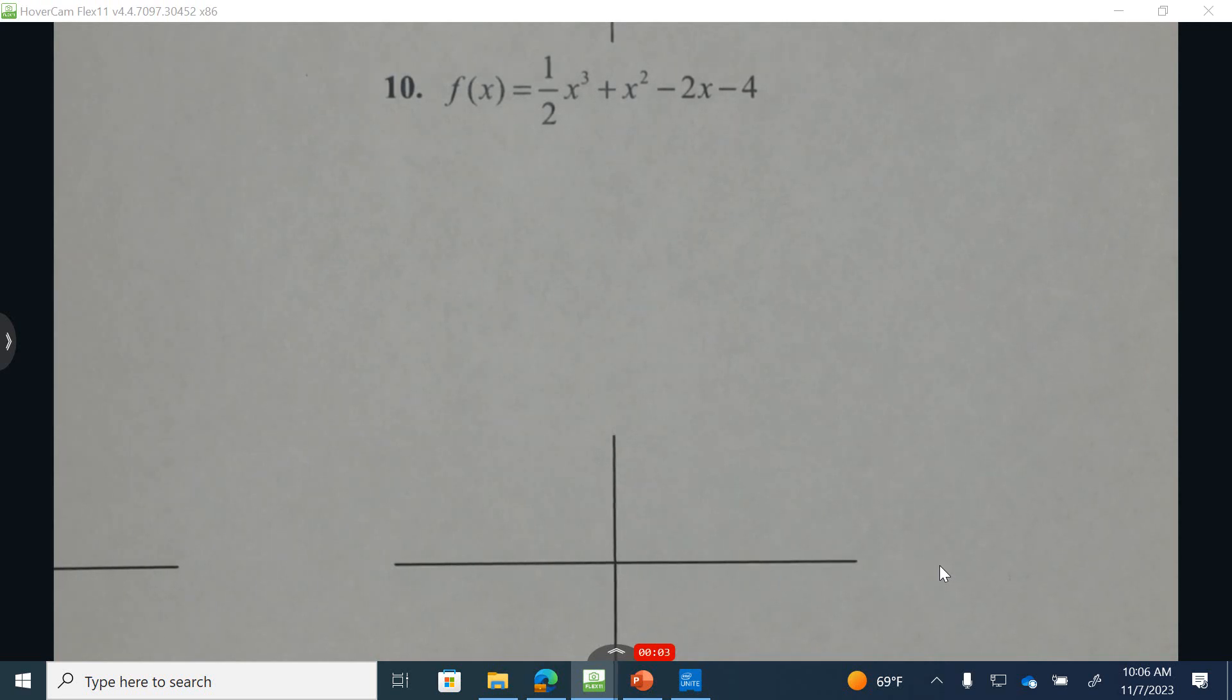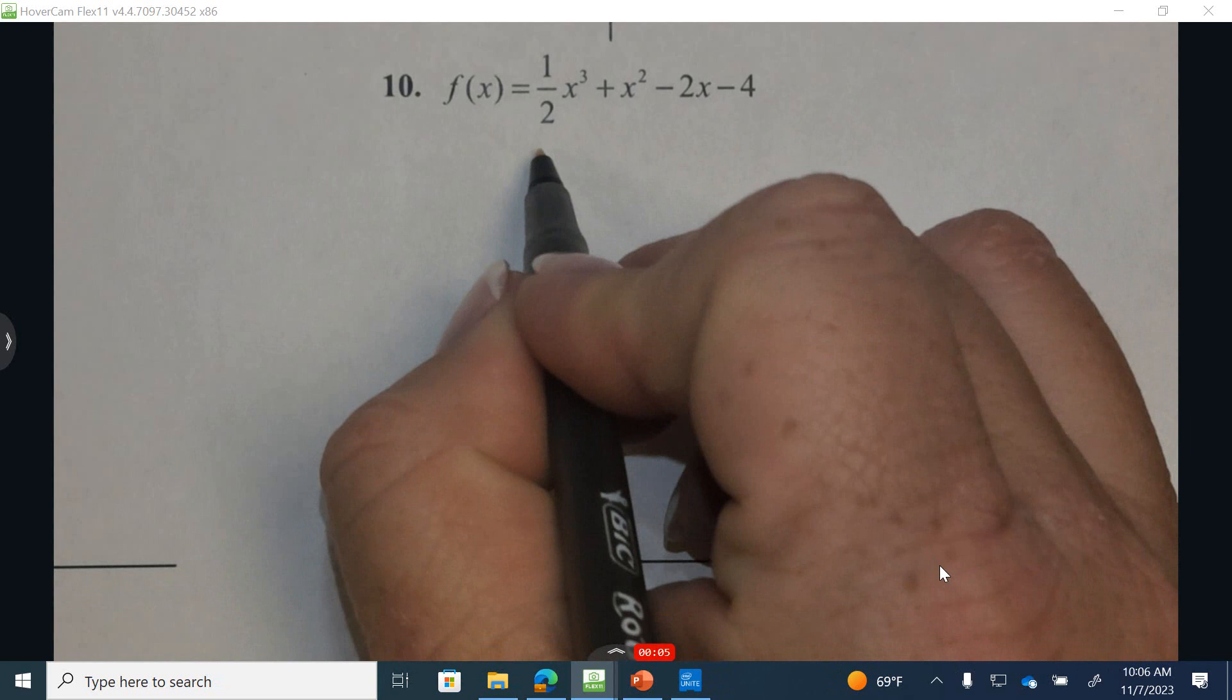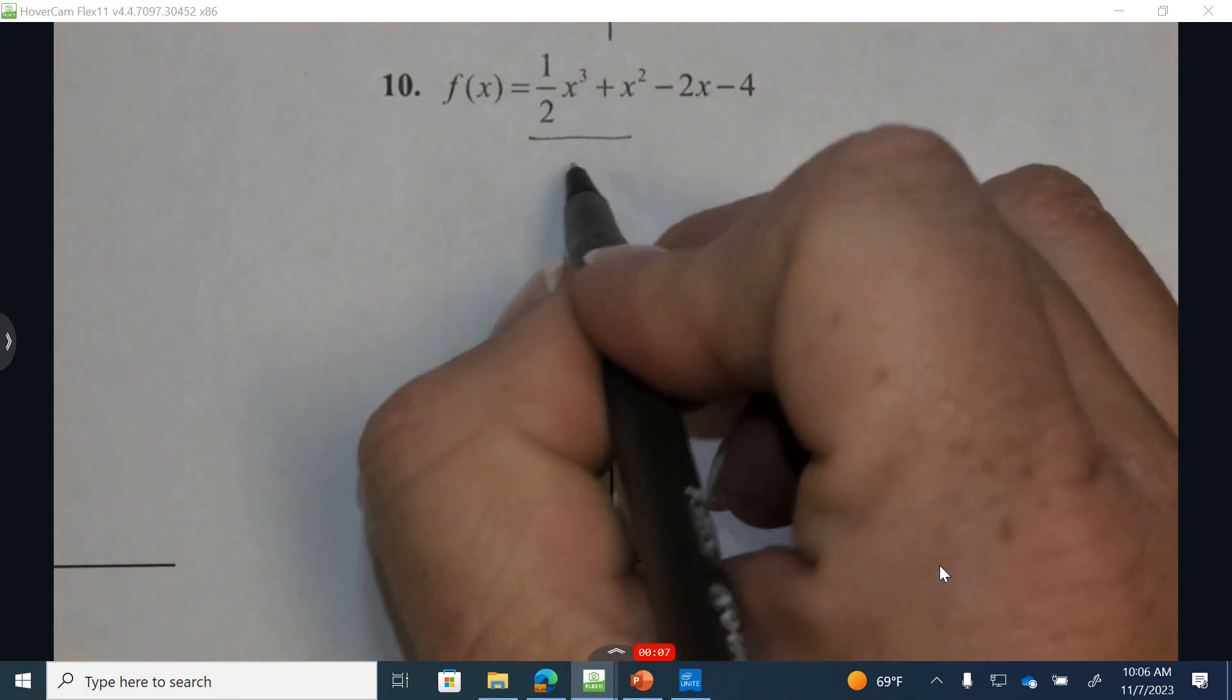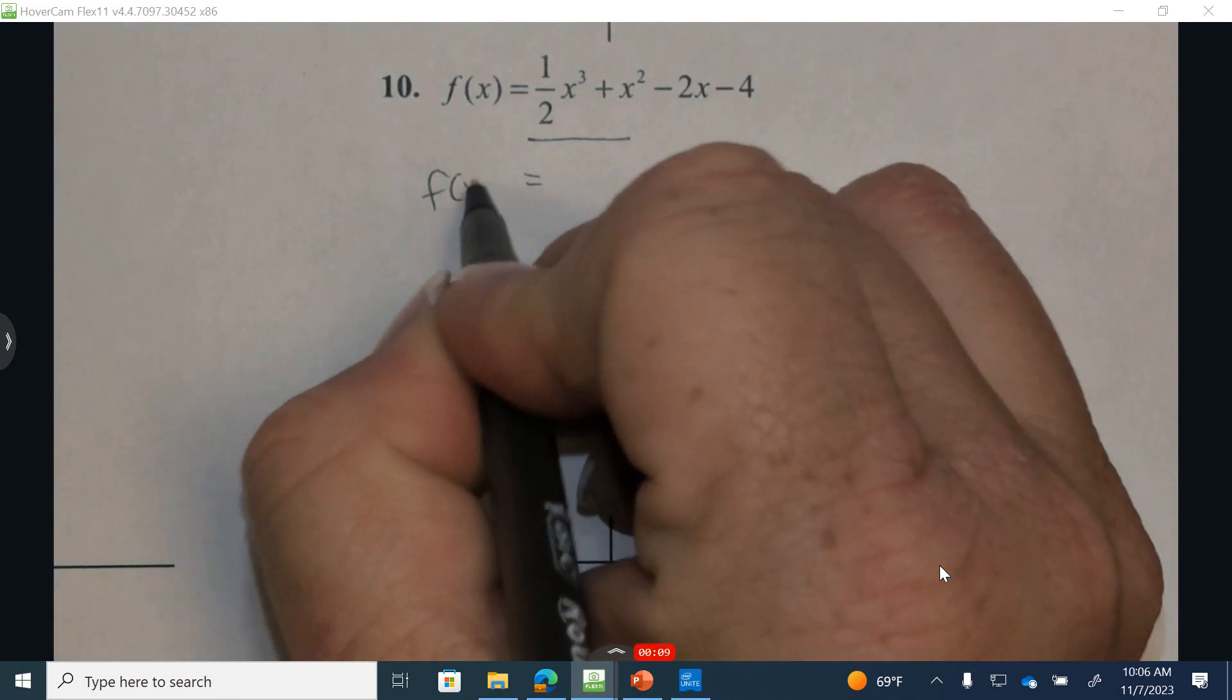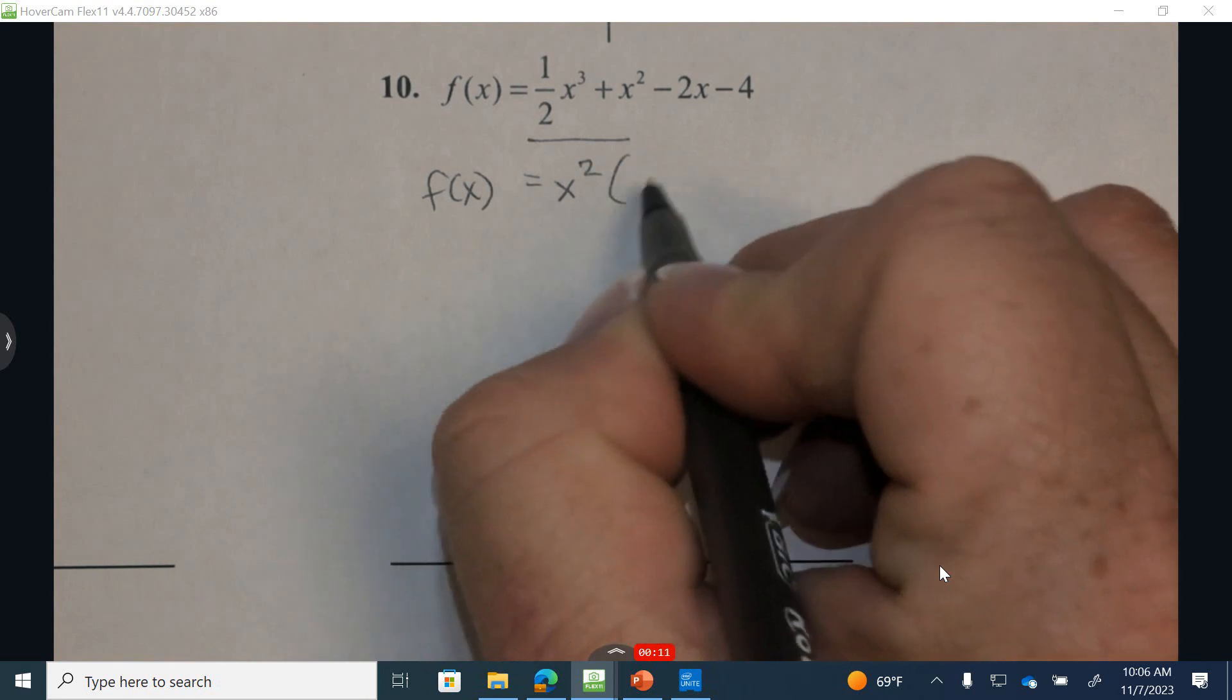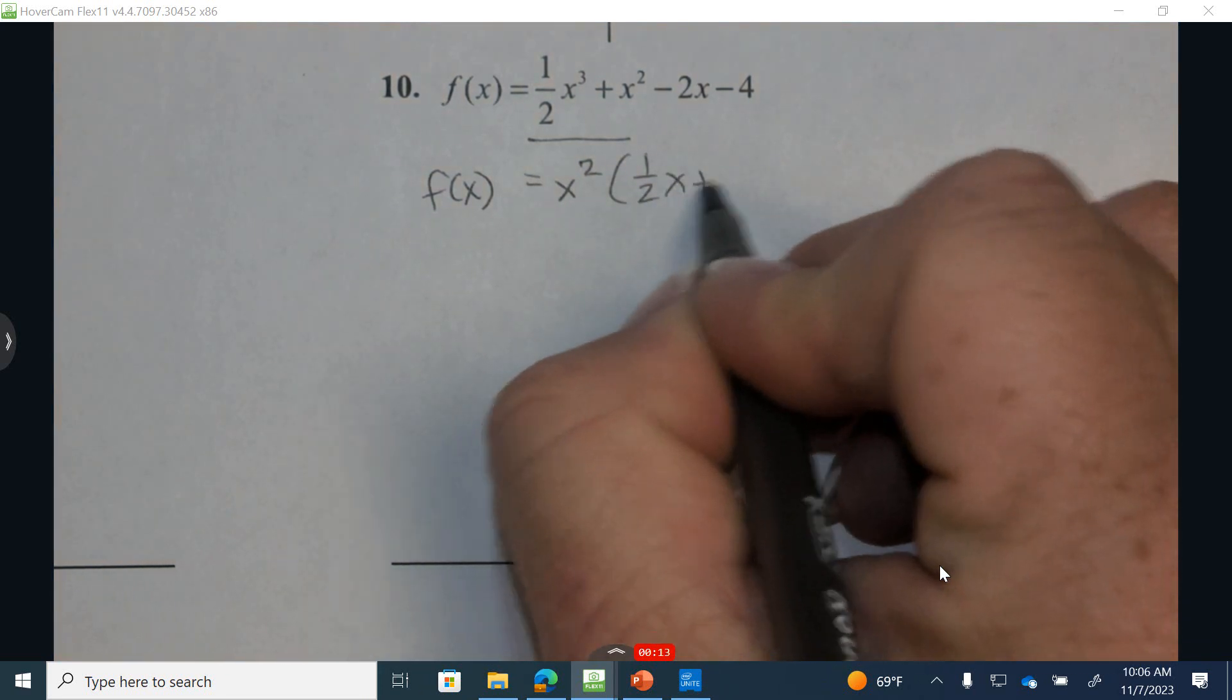I'm going to attempt to solve number 10 using factoring by grouping method. So out of the first two terms, I'm able to factor out an x squared, and I'm left with 1 half x plus 1.